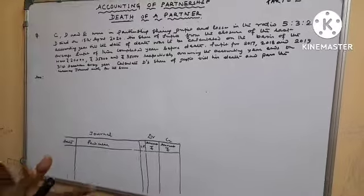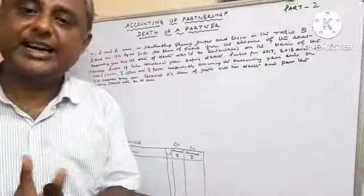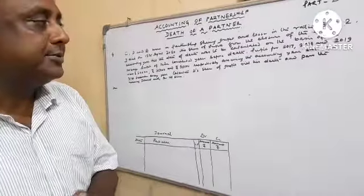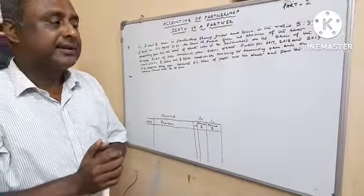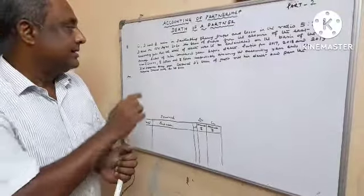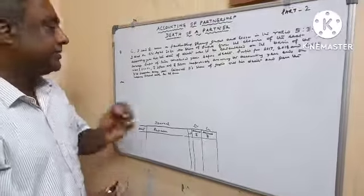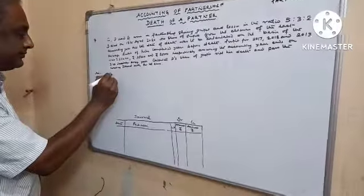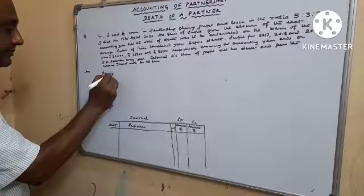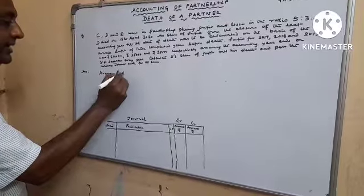For calculation of deceased partner's share of profit, first what to do? We learned in previous classes that first we have to find out average profit. So average profit is the profit of the 3 years.